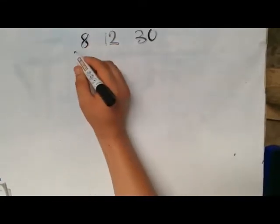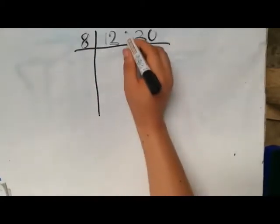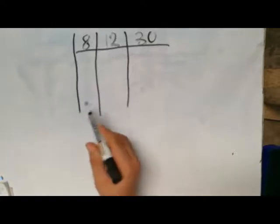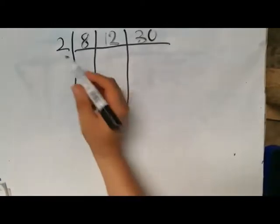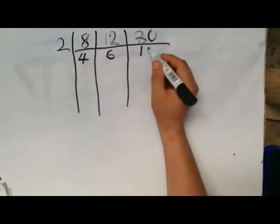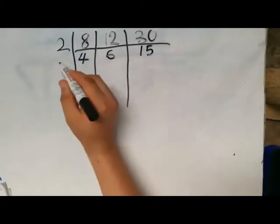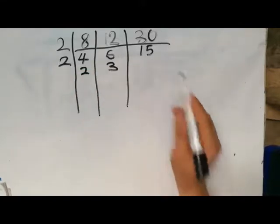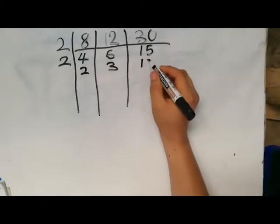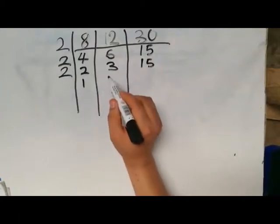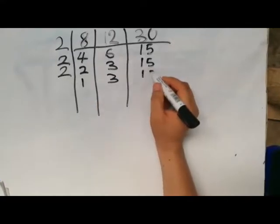Draw your table with columns for 8, 12, and 30. Ask which is the least number we can use to divide them — 2 works. 2 into 8 gives 4; 2 into 12 gives 6; 2 into 30 gives 15. Use 2 again: 2 into 4 gives 2; 2 into 6 gives 3; 2 into 15 won't go without a remainder, so we write 15. Since we still have 2, use 2 again: 2 into 2 is 1; 2 into 3 cannot go; 2 into 15 cannot go — write them down.